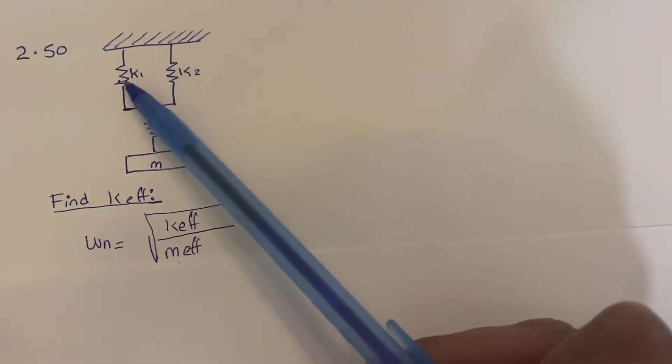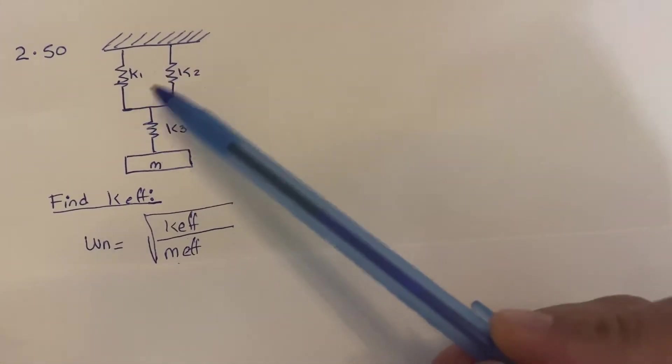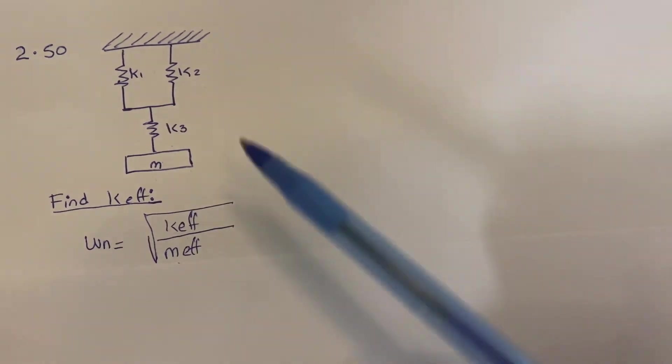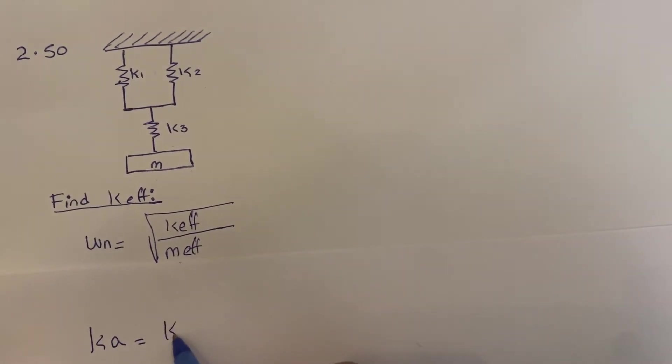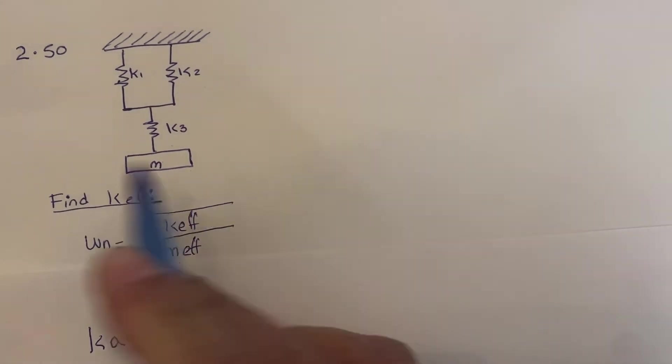Let's look at this problem. We have two springs in parallel connected with one spring. Let's work first with the two springs in parallel. We can have a single stiffness value by assuming k1 plus k2 because they are in parallel.